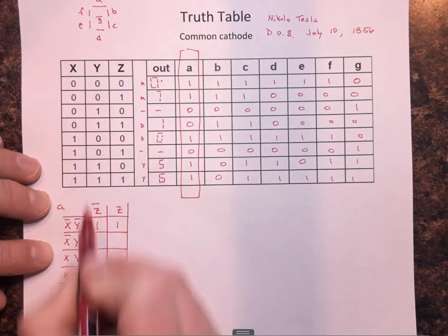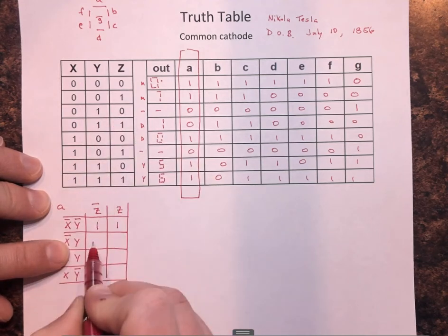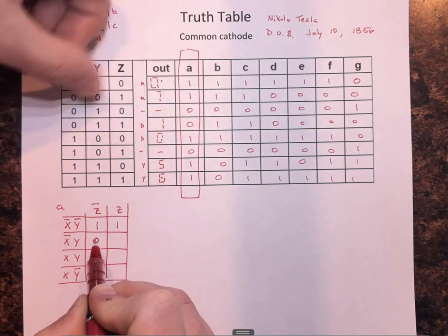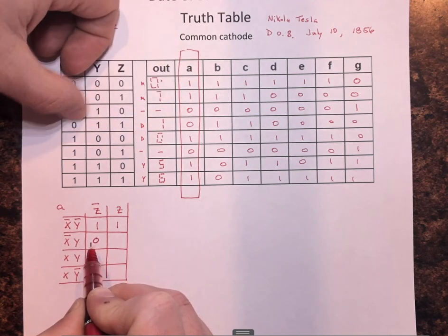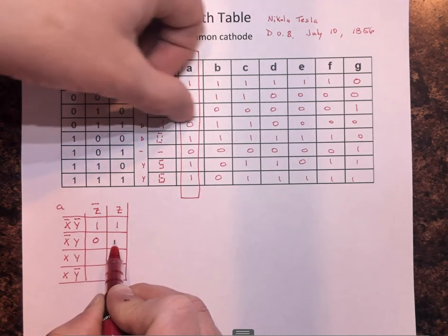The third one is not X, Y, not Z. Not Z is in this column. And that's a zero. The fourth row is not X, Y, Z. And the output is a zero.